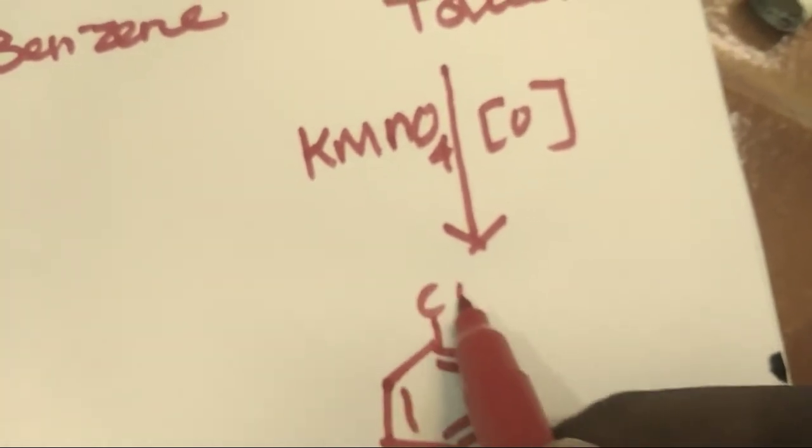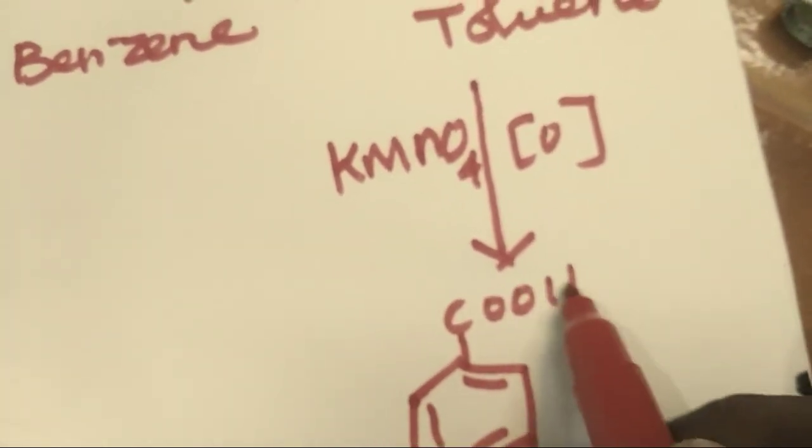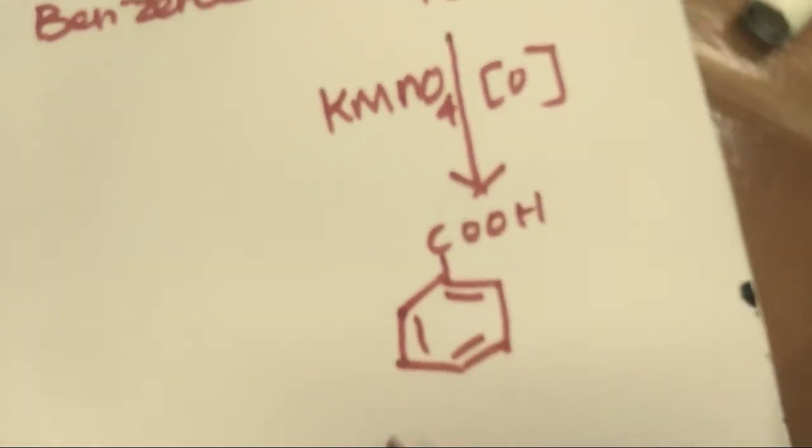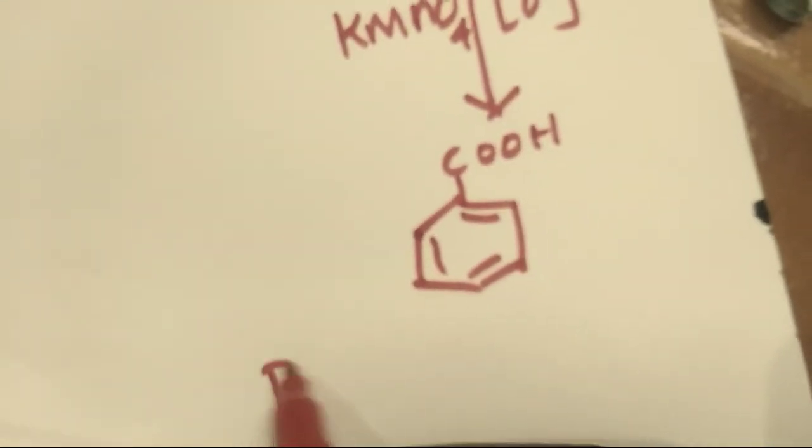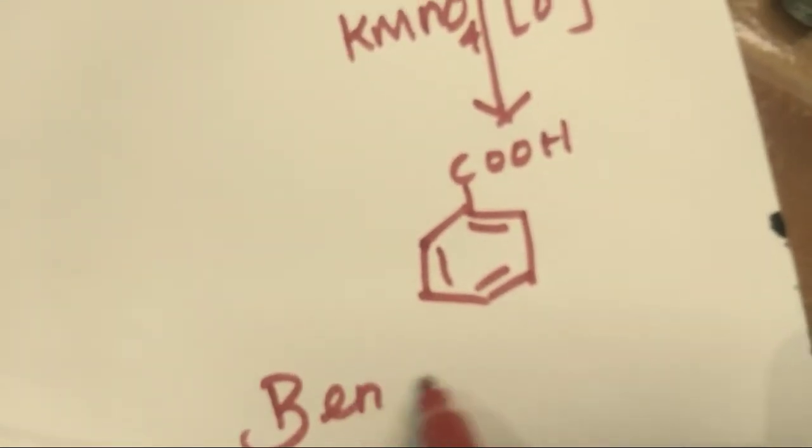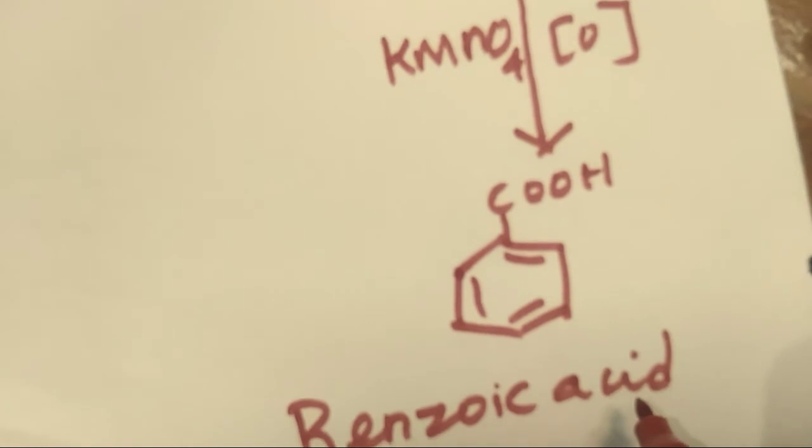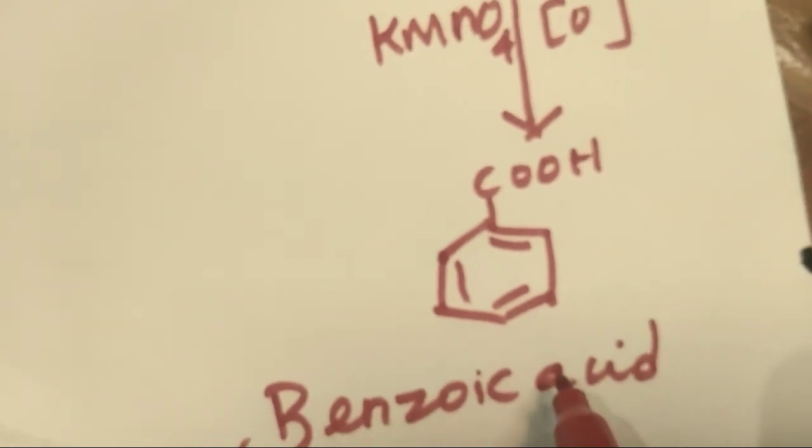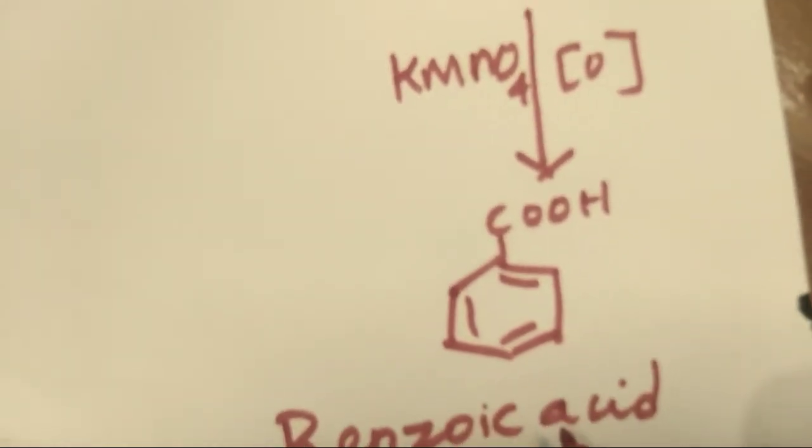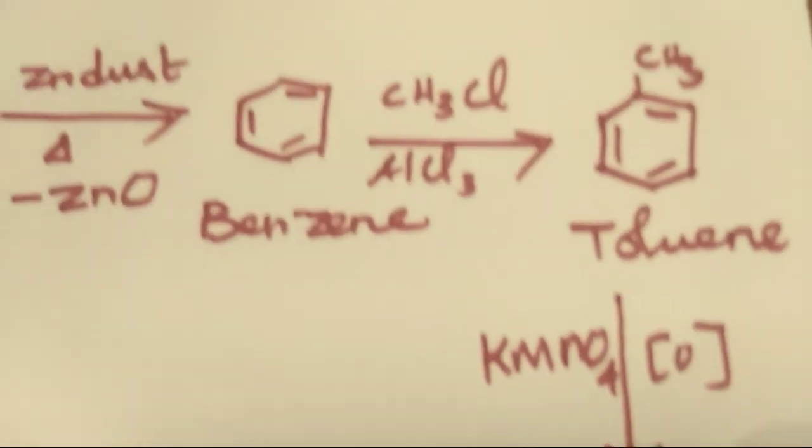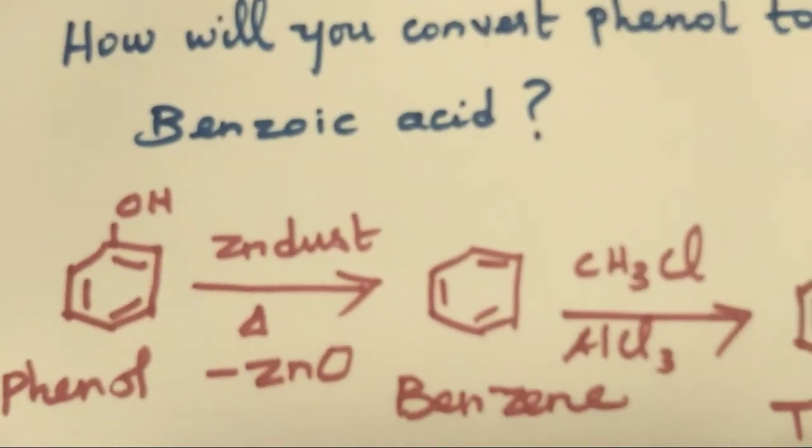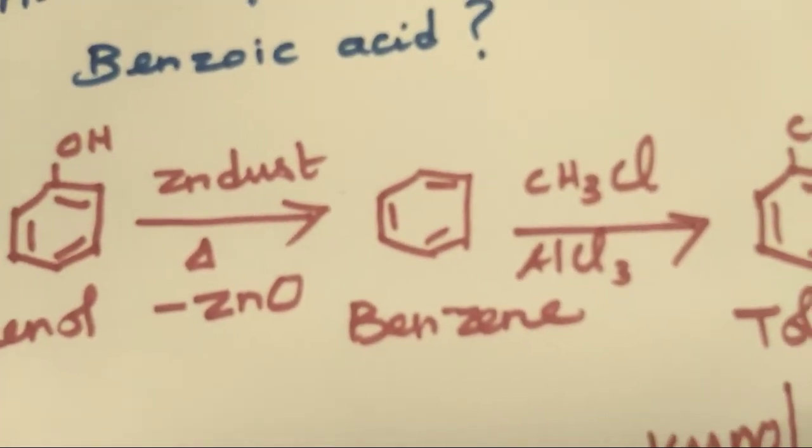Why is it known as benzoic acid? Because a phenyl group is substituted on carboxylic acid, so it is named benzoic acid. If you like this video, kindly subscribe.